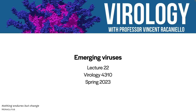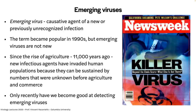Good afternoon. Today we're going to talk about emerging viruses. What is an emerging virus? A causative agent of a new or previously unrecognized infection. This term was coined in the 90s by Steve Morse, an epidemiologist at the medical center of Columbia. Emerging viruses are not new — they've been emerging for many years, and for humans since the rise of agriculture about 11,000 years ago, when more viruses started infecting humans because only with agriculture could populations expand sustainably.